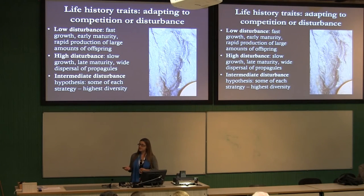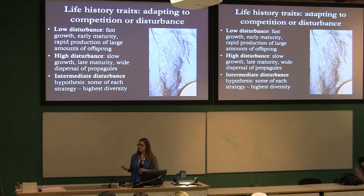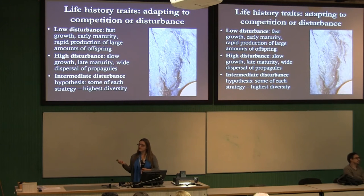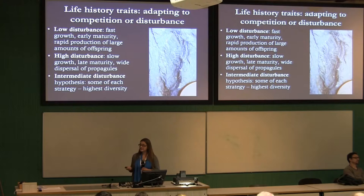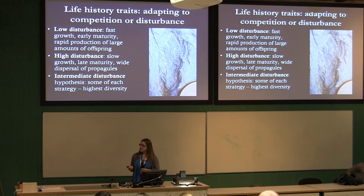Generally, in low disturbance regions, organisms are adapted to competition — they want to grow quickly, produce lots of offspring, and do that very quickly. In high disturbance regions, it's more about surviving the disturbance: slower growth, late maturity, and you want to get your propagules as widely dispersed as possible. A popular theory in modern ecology is the intermediate disturbance hypothesis — a Goldilocks zone where you get some low disturbance forms and some high disturbance forms. And so we wondered: could we look for some of these traits in rangomorphs, in our Ediacarans?